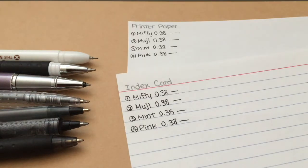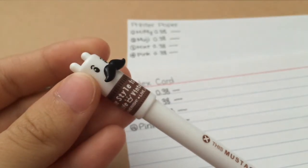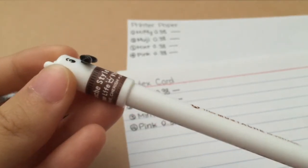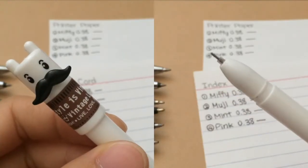And next we have the 0.5 pens which are these three right here. So first off we have this mustache pen here and it's really adorable and it's also by MNG. This is also a needle tip pen.